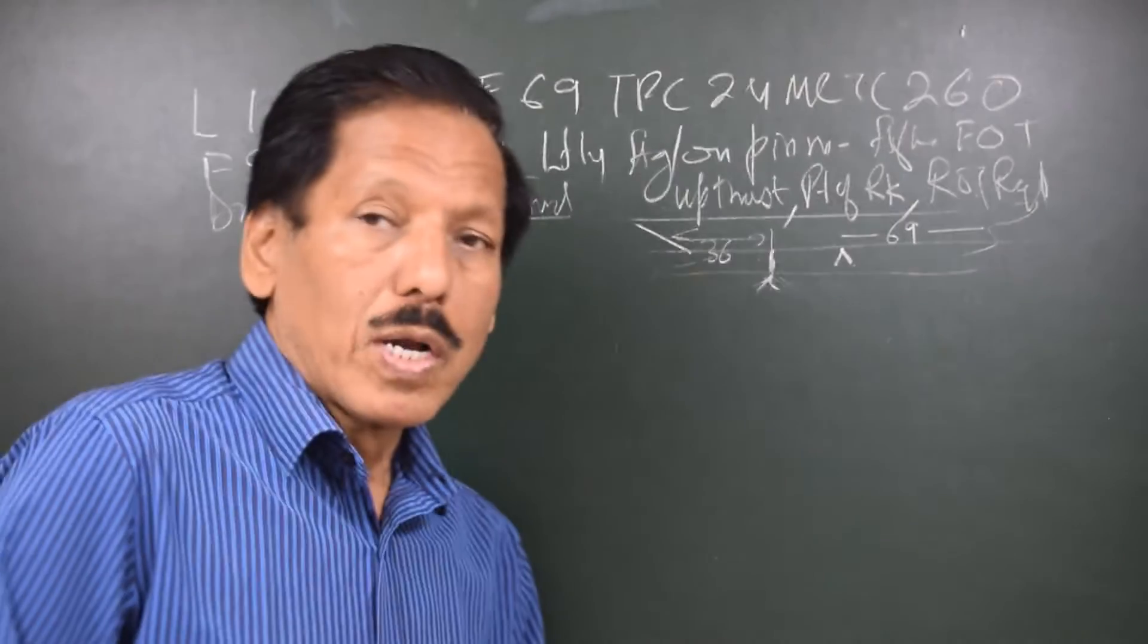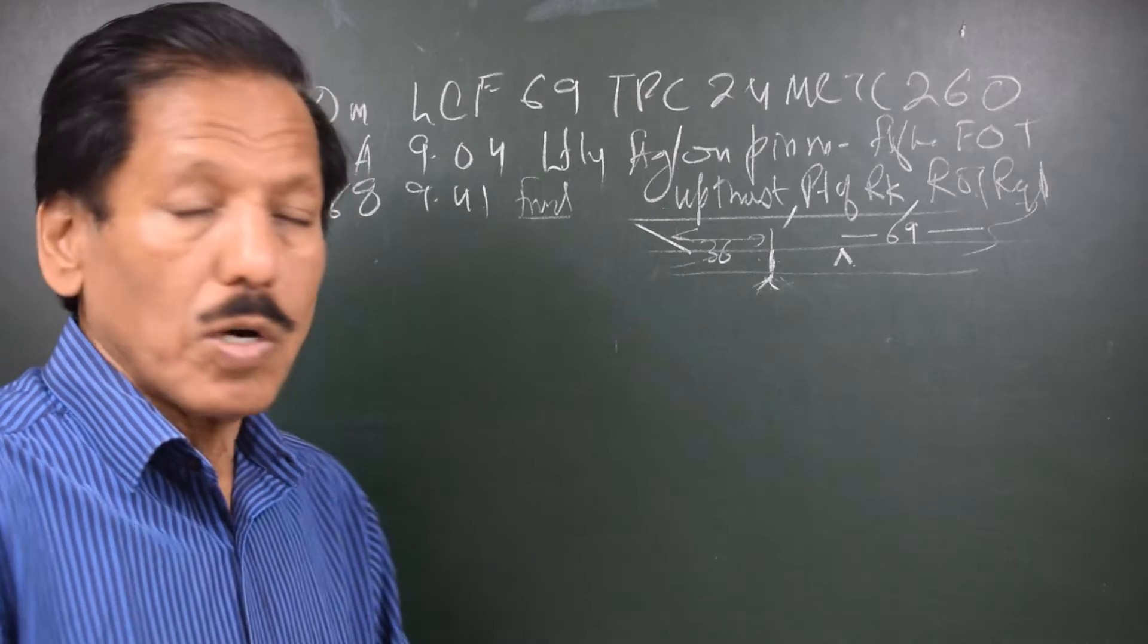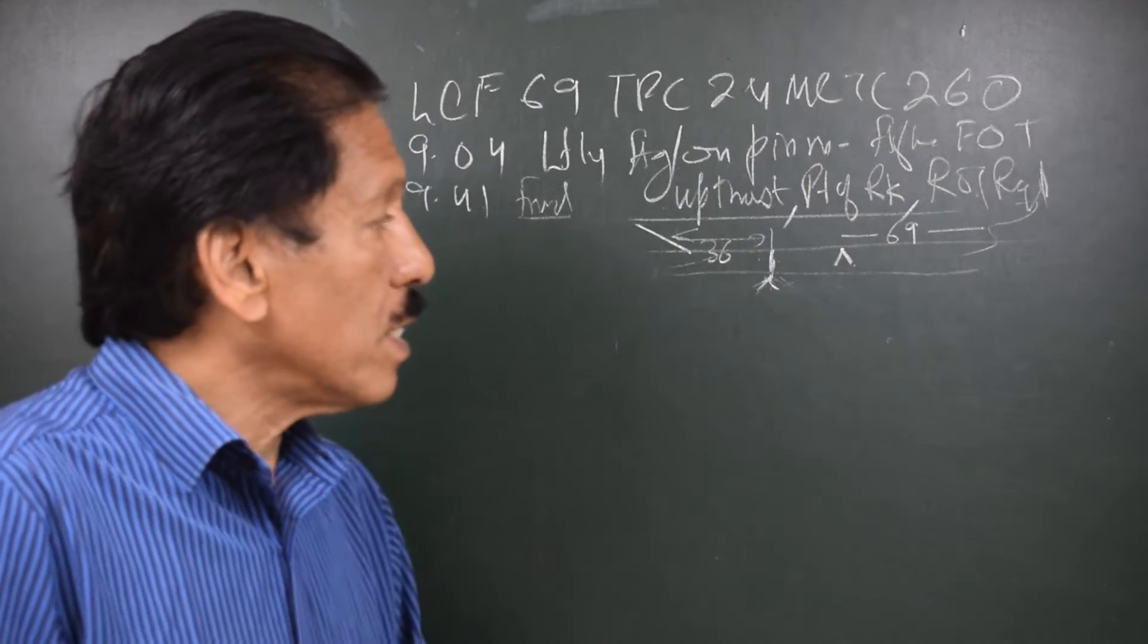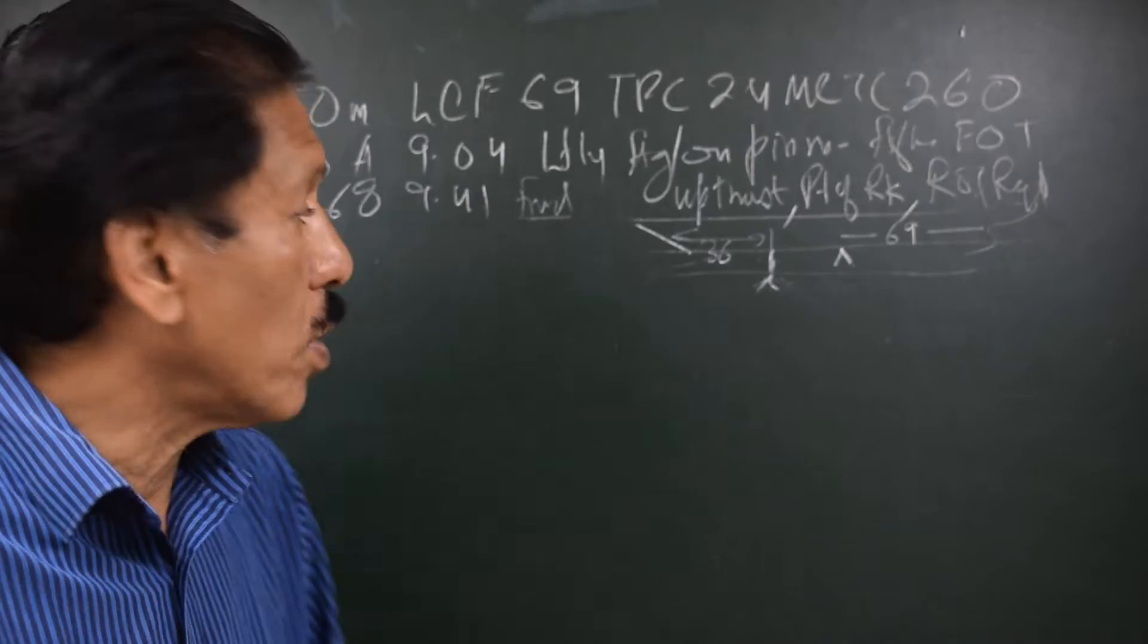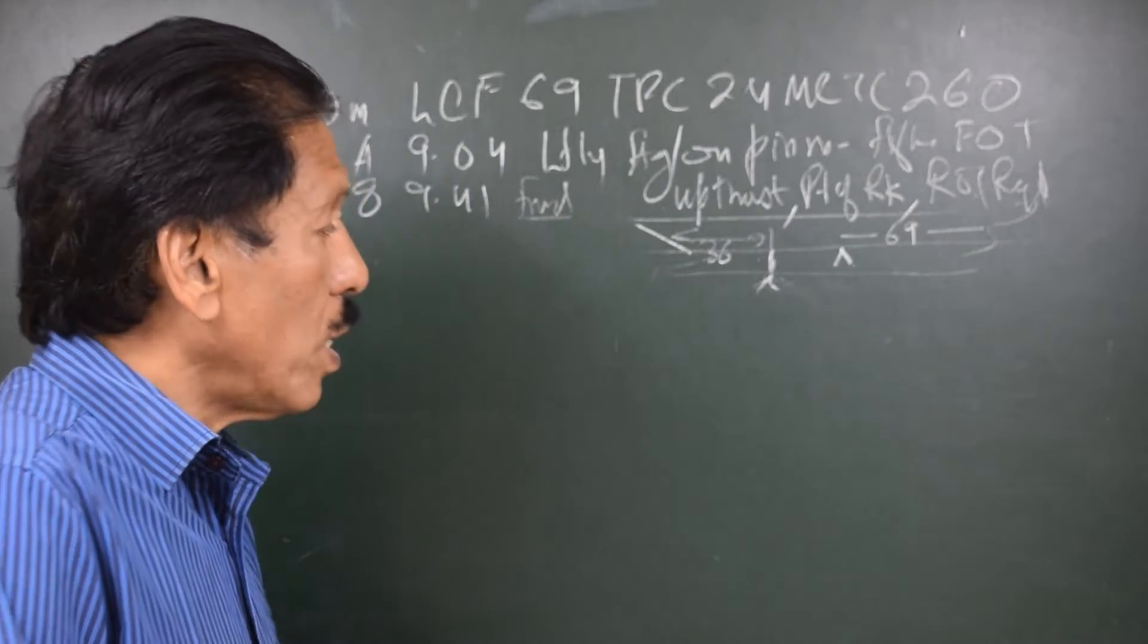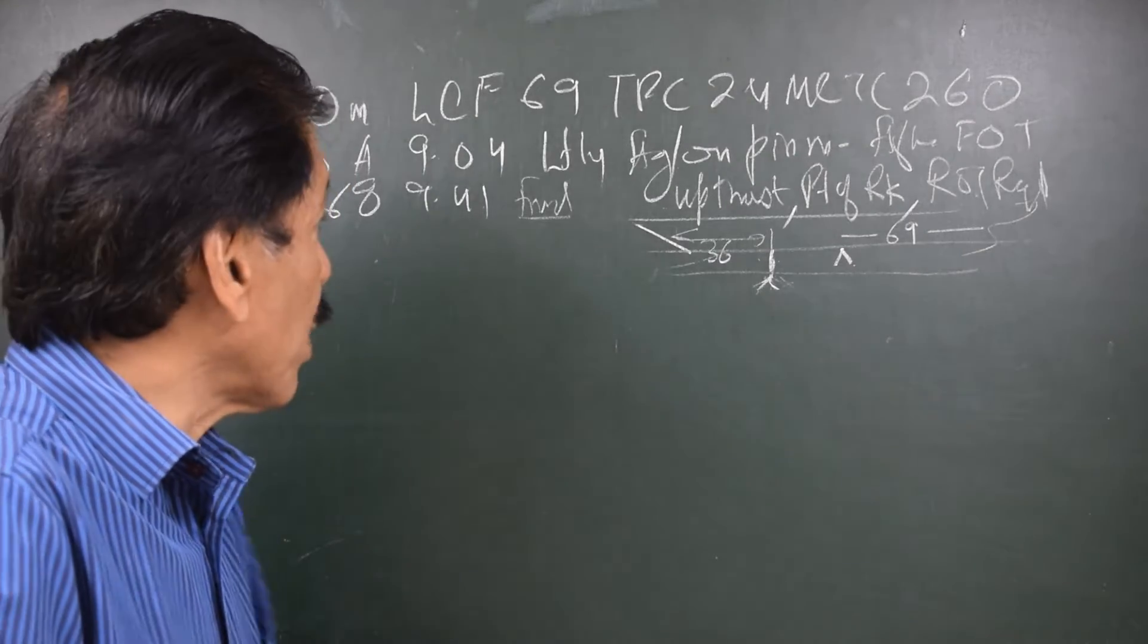What you are required to find out is the upthrust caused on the ship, the point of the rock, and the rise of tide required that the ship would refloat again. This is a practically very important situation which a mariner must know.